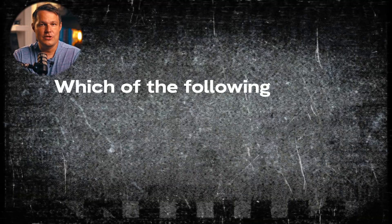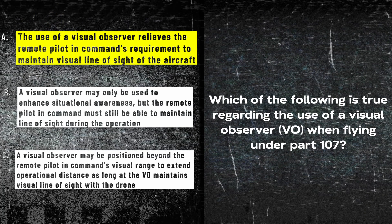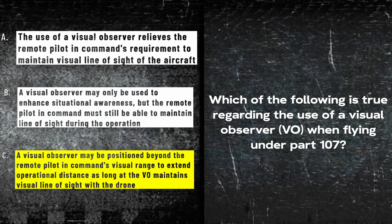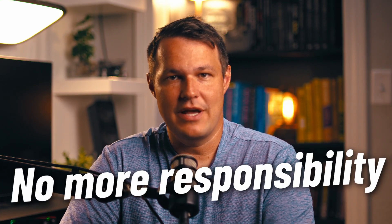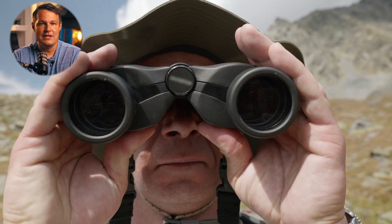Question three is about visual line of sight and visual observers, or VOs. The question asks: which of the following is true regarding the use of a visual observer when flying under Part 107? These questions confuse people because they think using a visual observer means the pilot no longer needs to maintain visual line of sight — which is not true. Others assume FPV goggles or binoculars count as line of sight, but the regulation does not say that.